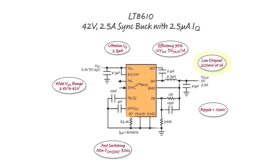The LT8610 can operate with a low dropout of 200 millivolts at 1 amp under all conditions, similar to that of an LDO regulator.